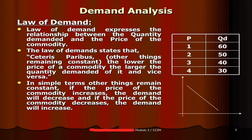When other things remaining constant (ceteris paribus), the lower the price of a commodity, the larger the quantity demanded of it, and vice versa. Here we mention ceteris paribus, which means other things remaining constant — meaning factors apart from price are held constant.